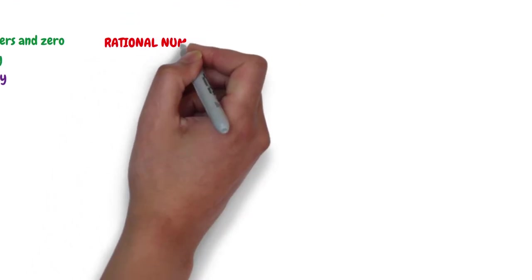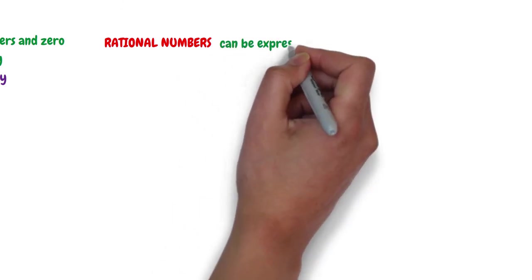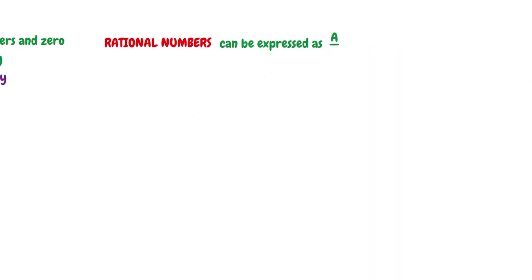The sixth set of numbers is the rational numbers. Rational numbers are numbers that can be expressed as A over B, where A and B are integers. Examples of rational numbers include 1 over 2, 5 over 3, negative 3 over 10, and negative 97 over 5.